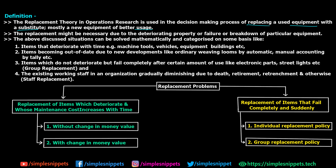Replacement may be necessary due to deteriorating property — meaning your objects, machines, cars, or whatever assets you own are deteriorating over the course of time — or due to failure or breakdown. A machine or car can suddenly break down. Mathematically, we can categorize these replacement scenarios into four different types.